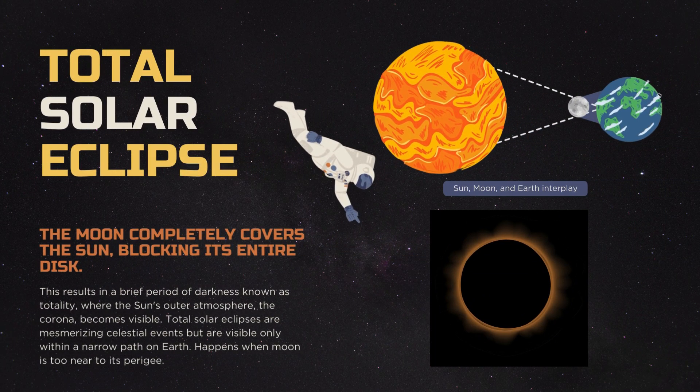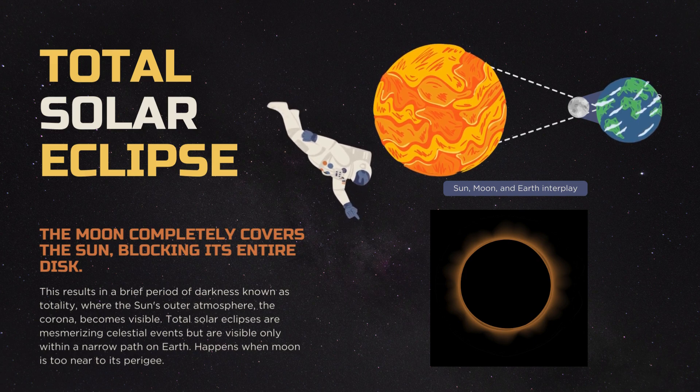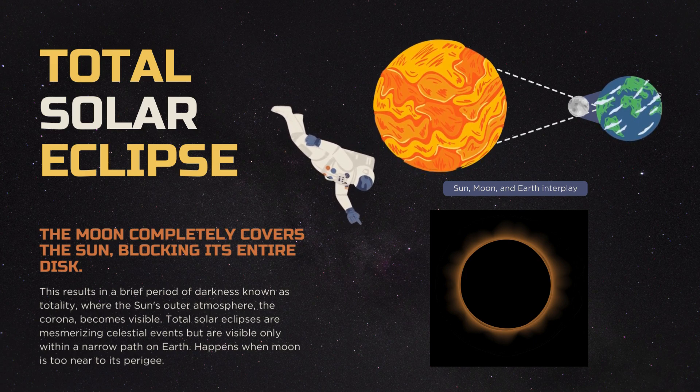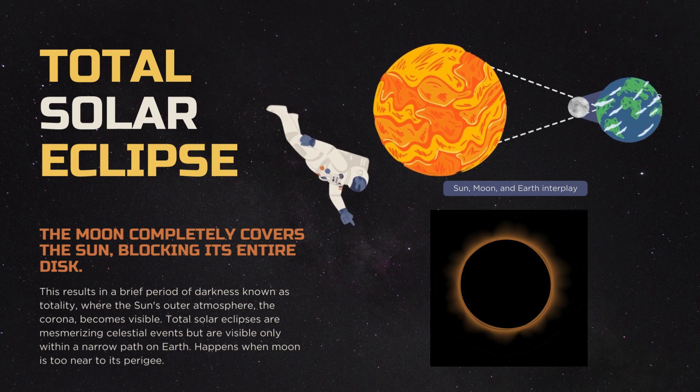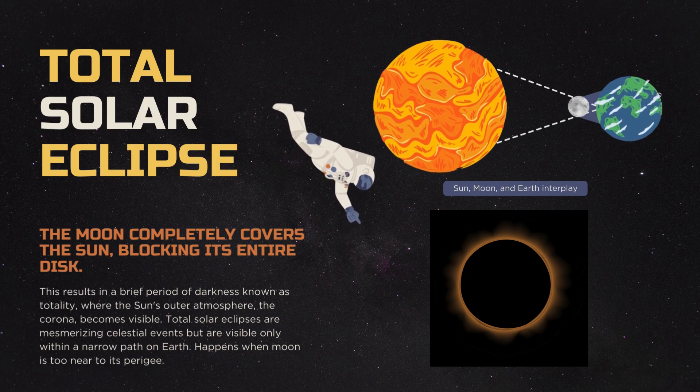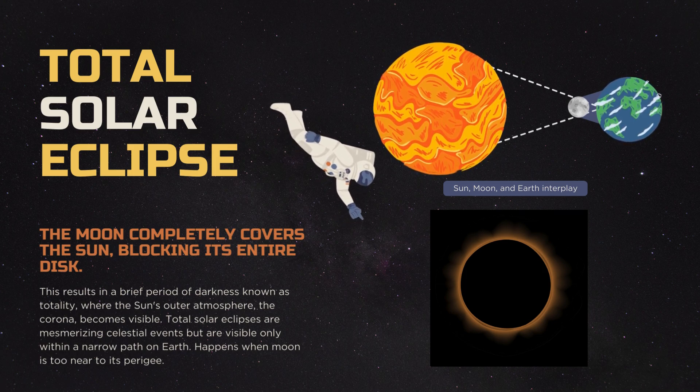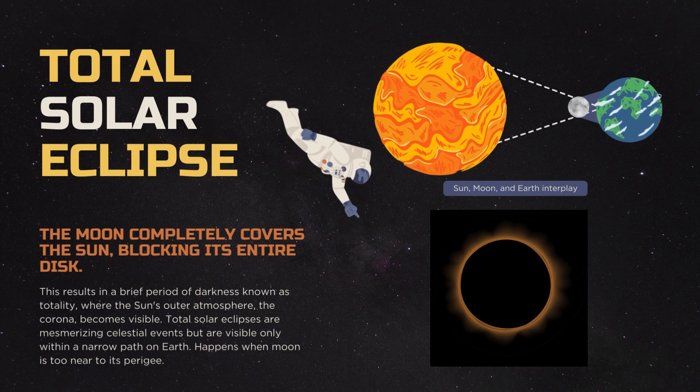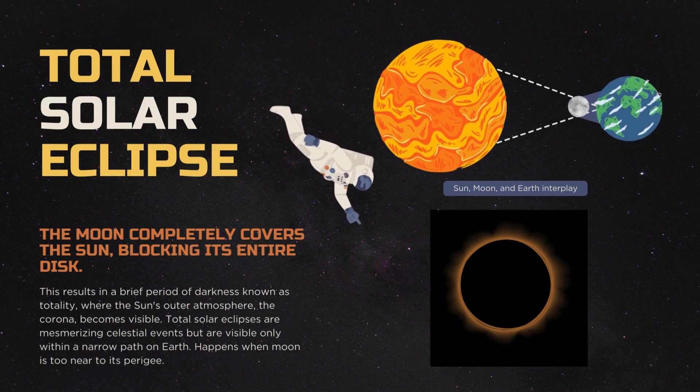So in a total solar eclipse, the moon completely covers the sun, blocking its entire disk. This results in a brief period of darkness known as the totality, where the sun's outer atmosphere, the corona, becomes visible. Total solar eclipses are mesmerizing celestial events but are visible only within a narrow path on earth.